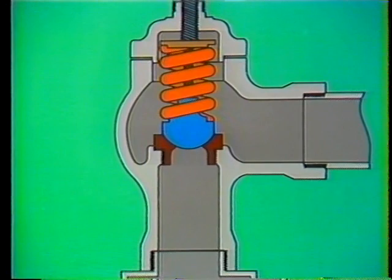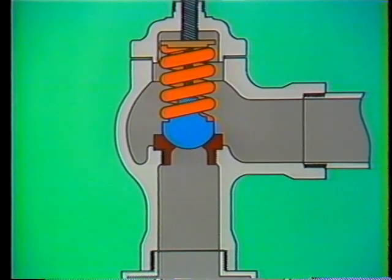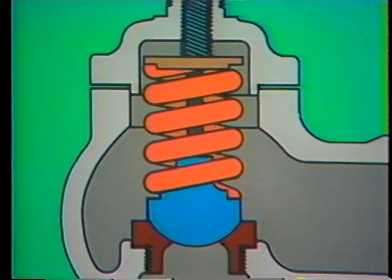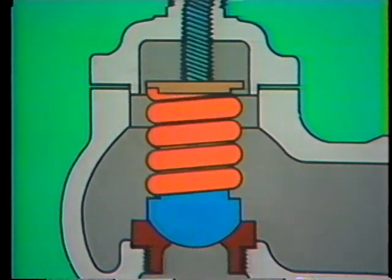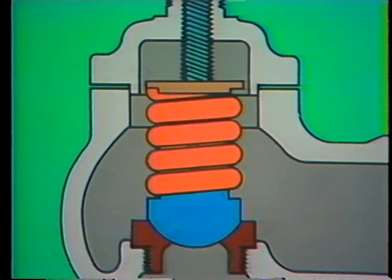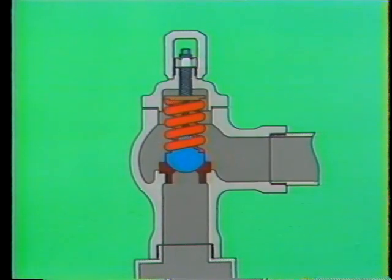You can see how important proper spring tension is to the function of a relief valve. But like any other component, springs wear after extended service, losing some of their stiffness. This changes the opening and closing point of the valve. To correct this, the spring adjusting screw can be tightened, which increases tension on the disk and raises the opening pressure of the valve. Loosening the adjusting screw has the opposite effect — it reduces the amount of tension on the disk, allowing the valve to open at a lower pressure. Remember, though, that each relief valve is designed to handle a certain range of pressures, so each can only be adjusted so much. Before making any adjustment to any relief valve, consult the manufacturer's instruction manual. Know exactly what you're doing before you do it.